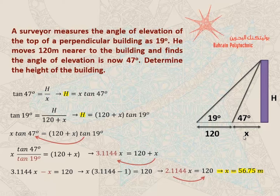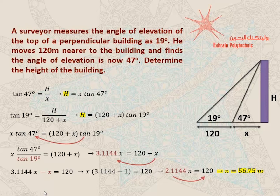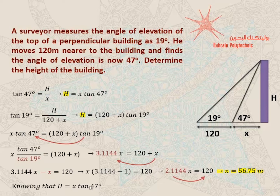That is only the value of x, but they want me to determine the height of the building, so I need the value of h. I go back and substitute the value of x into one of the h equations — I'll choose the shorter one: h equals x tan of 47. Plugging in x equals 56.75, I get 56.75 multiplied by tan of 47, which gives me 60.85 meters. This is the height of the building.